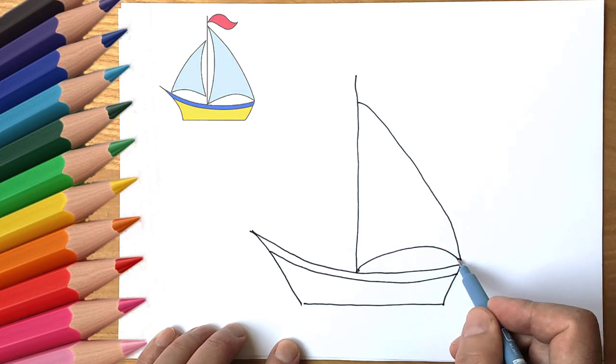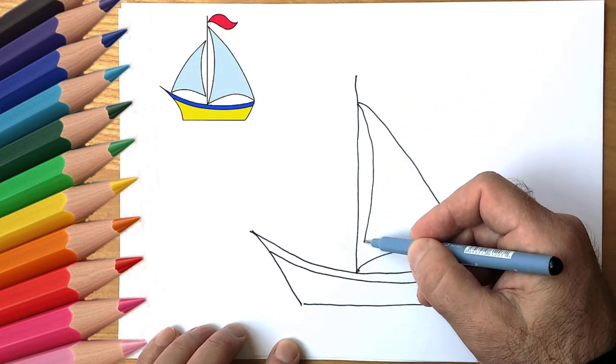Now draw the mast. That is, we draw two vertical lines side by side.